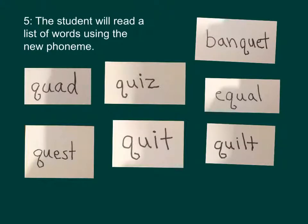The student will read a list of words using the new phoneme: quad, quiz, equal, and spells them letter by letter: qu-A-D, qu-I-Z, E-qu-A-L.